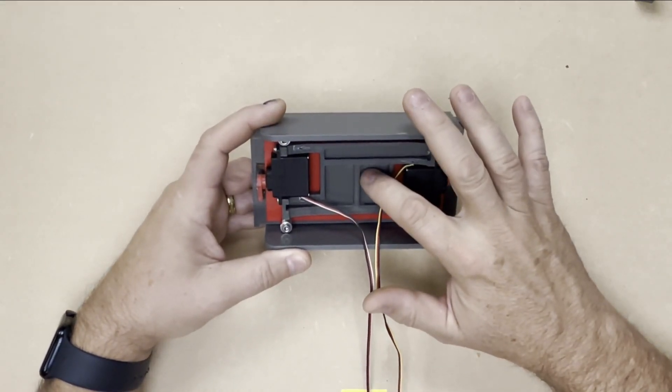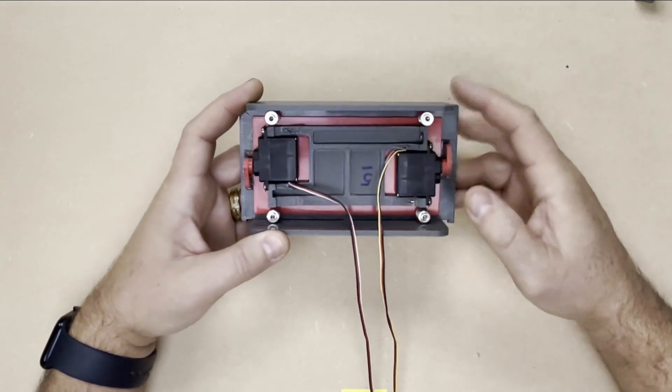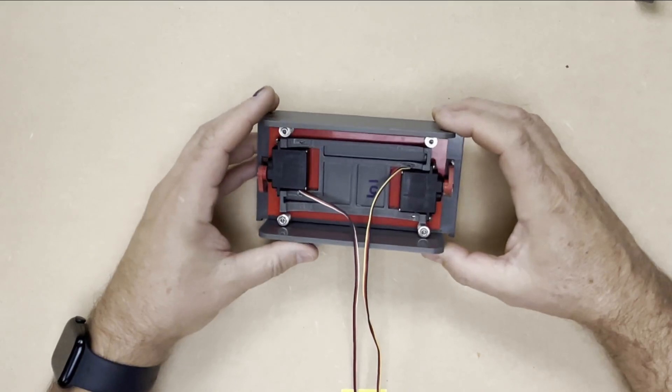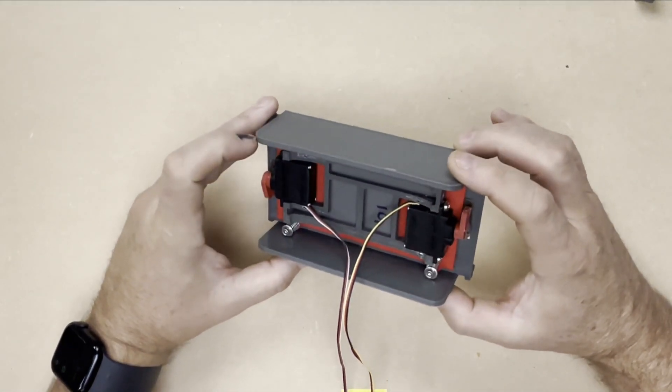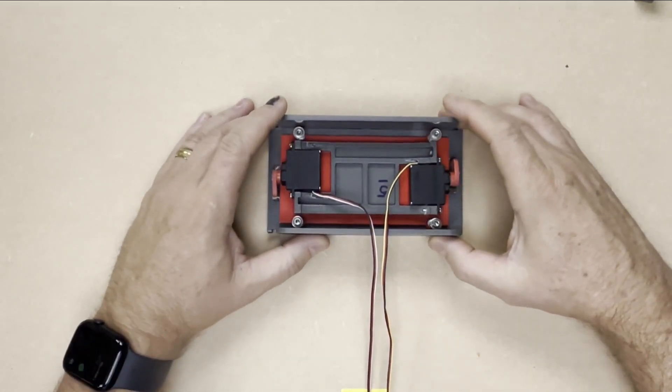This is the servo holder. And then, of course, we have servos. We have some springs. And I think that's about it. So let me show you how it all works together.